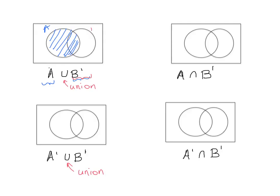As well as everything in B complement — which is the same as saying everything outside B. It ends up that only one small portion is not shaded, and that is the B-only section. So that is A union B complement — remember you're shading everything in A as well as everything in B complement.